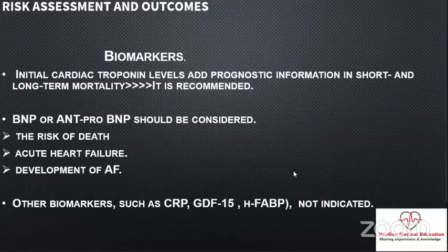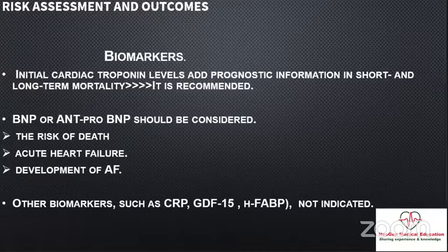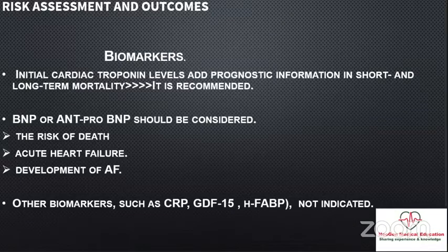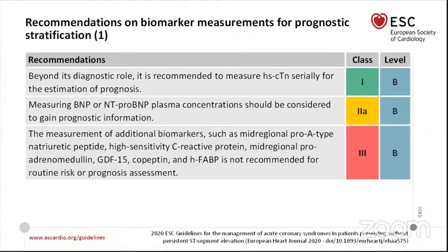Beyond the diagnostic significance of high-sensitivity cardiac troponin, the guideline also recommends using initial cardiac troponin levels to add prognostic value for short- and long-term mortality — Class 1B. In addition to high-sensitivity cardiac troponin, BNP or NT-proBNP should be considered, mainly to give a clue about risk of death, acute heart failure, or development of atrial fibrillation. The recommendation is Class 1B for troponin, Class 2A for NT-proBNP, and the guideline does not recommend using alternative biomarkers like CRP.